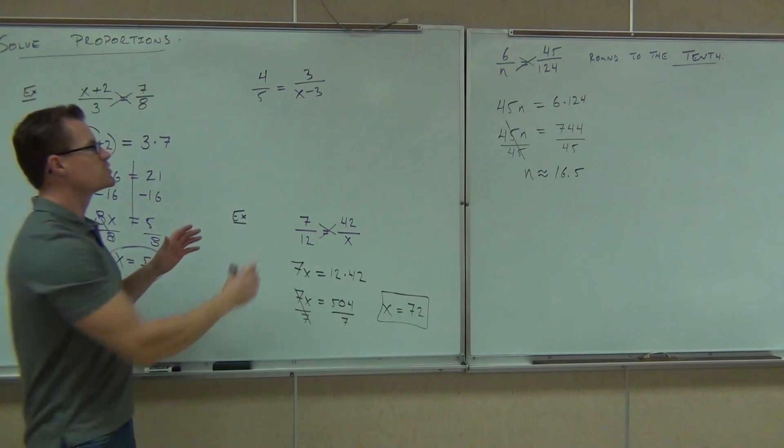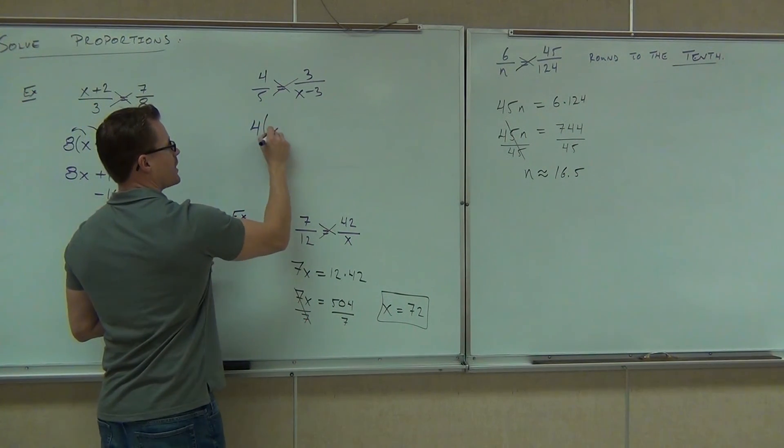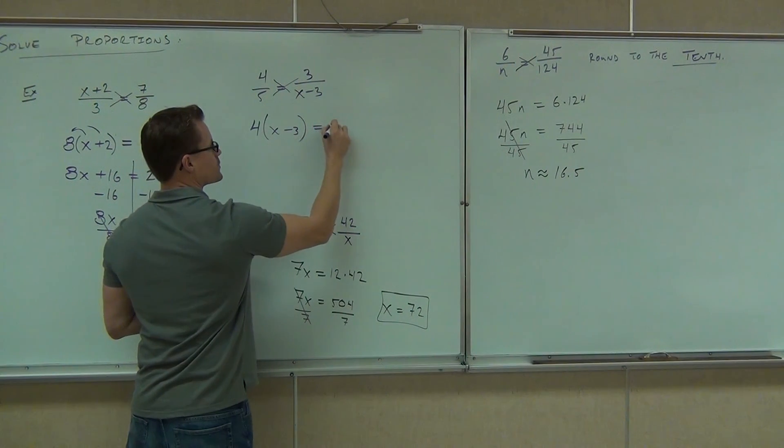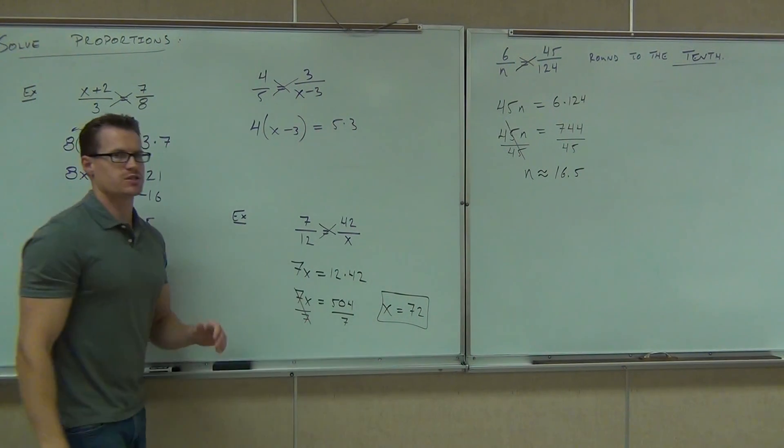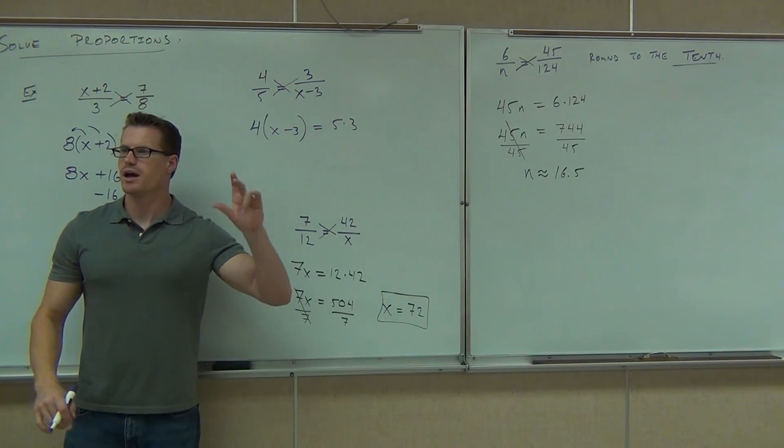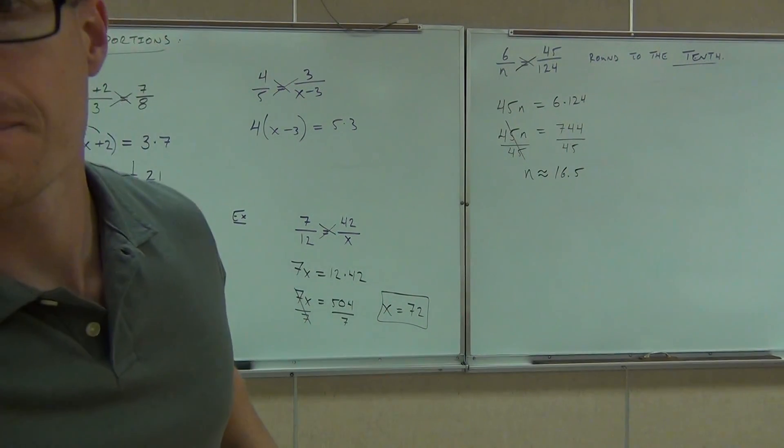Okay, just make sure when you're doing this, you're giving me 4 times x minus 3 in parentheses first, and 5 times 3 on the other side, just like that. Then you would distribute and solve that down. We'll end there today. All right. That's all right.